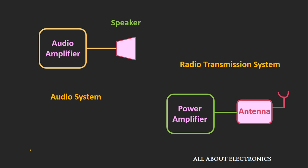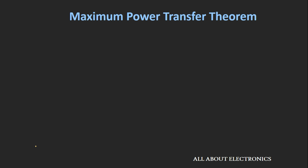The maximum amount of power will get transferred to the load from the circuit only when the value of the load resistance is optimum. If the value of the load resistance is either above or below this optimum value, then the maximum amount of power will not get transferred to the given load. This maximum power transfer theorem helps us in finding the value of load resistance for which the maximum amount of power will get transferred to the load.